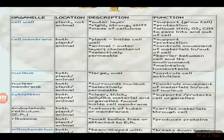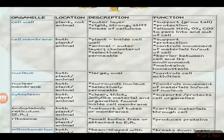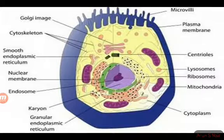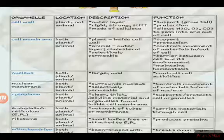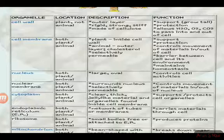This is a ribosome. Ribosomes are found in both plant and animal cells. This is a small body, free or attached to the endoplasmic reticulum. Ribosomes help with protein production.